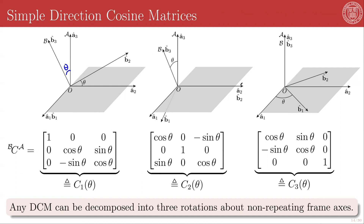Rotating about A2: A2 becomes B2, A1 rotates into B1, and A3 rotates into B3. Rotating about A3: A3 goes to B3, A1 goes to B1, and A2 goes to B2. You will note that qualitatively, the first and third rotation diagrams appear basically the same, while the second looks a little different. That's just the nature of counterclockwise rotations — we define counterclockwise by looking down the axis of rotation.